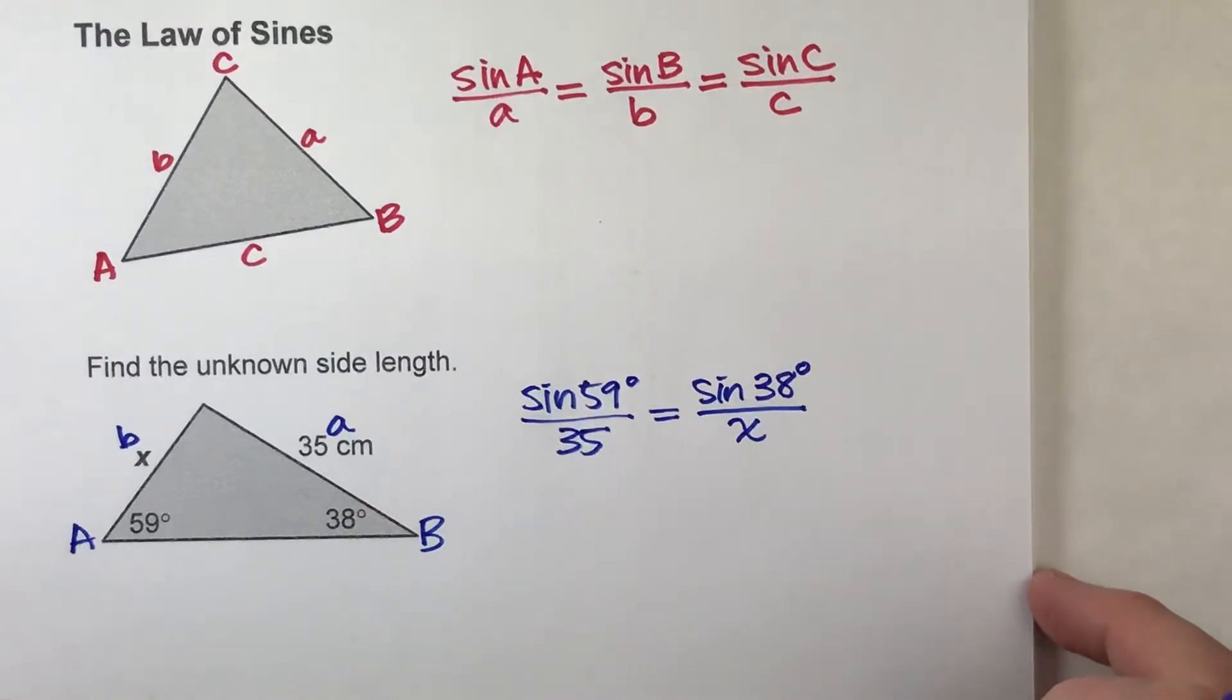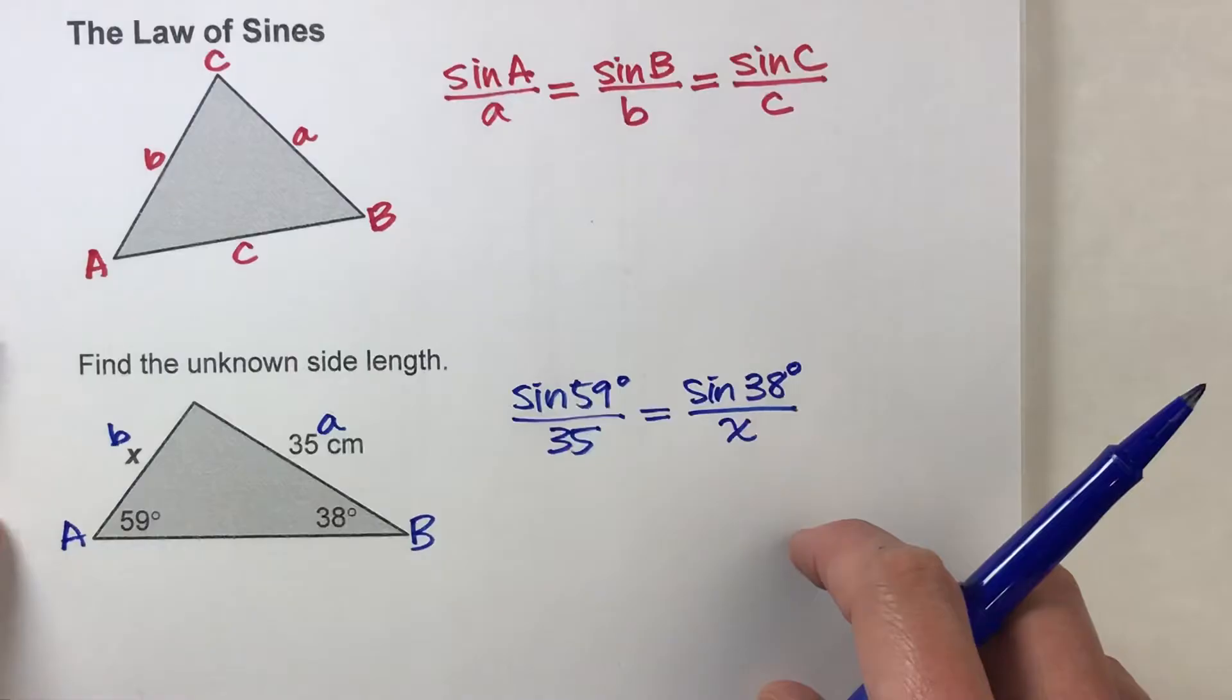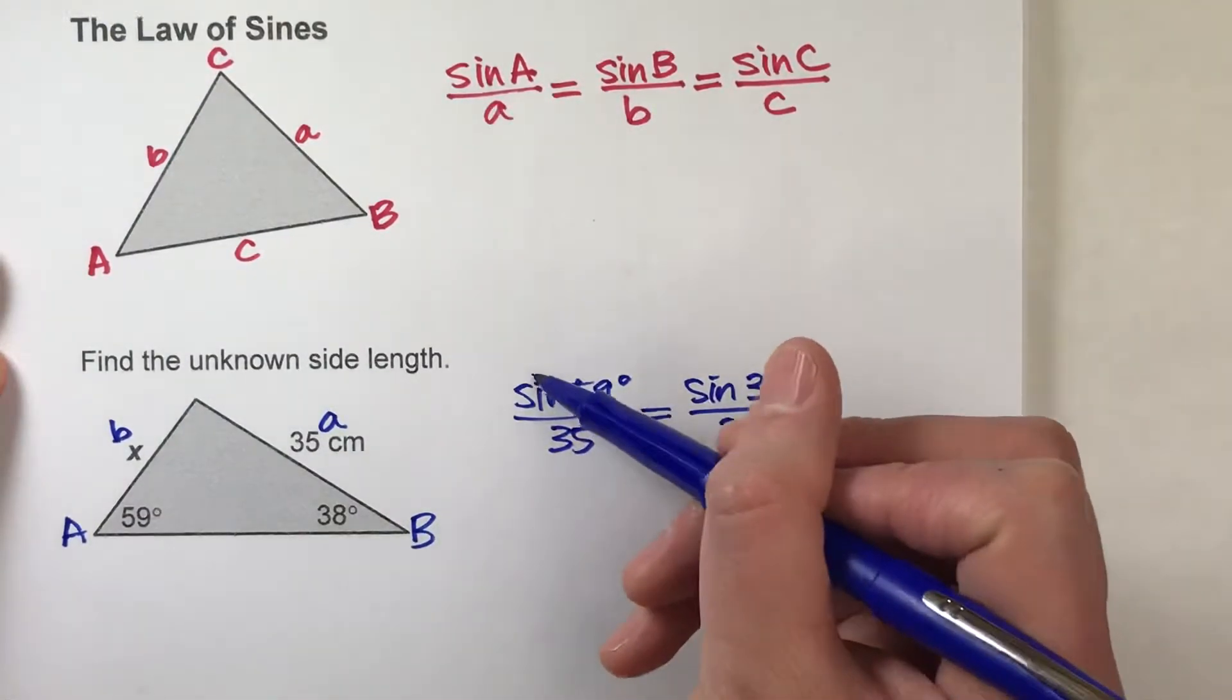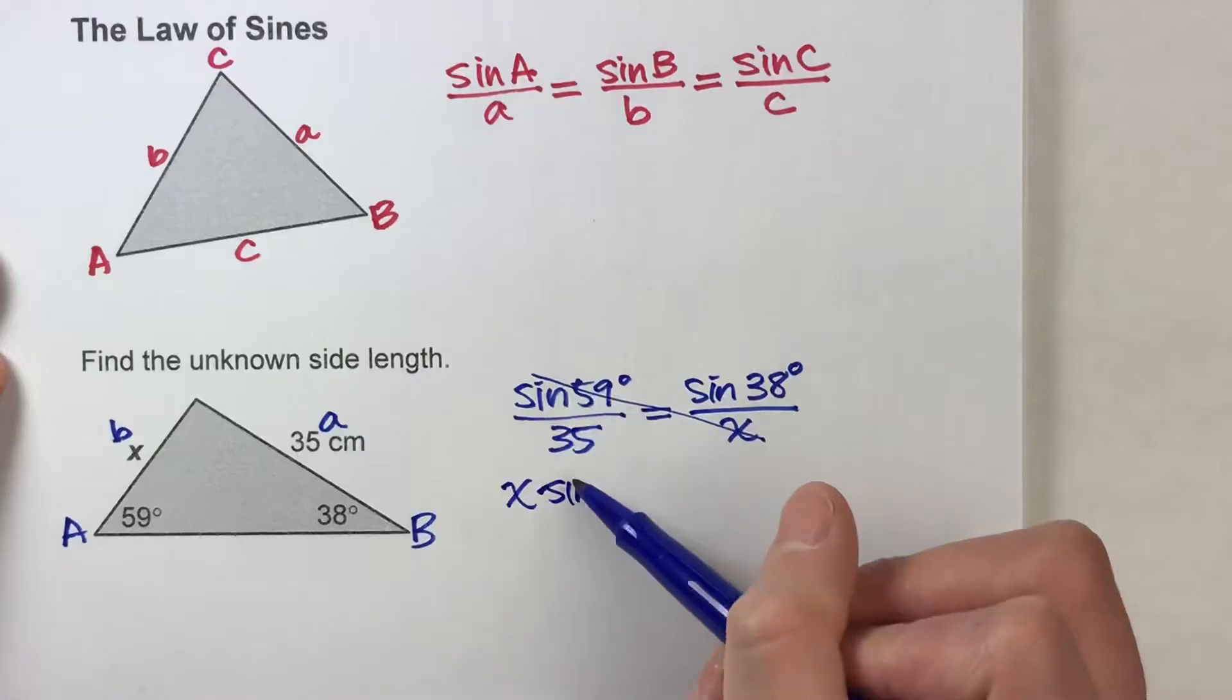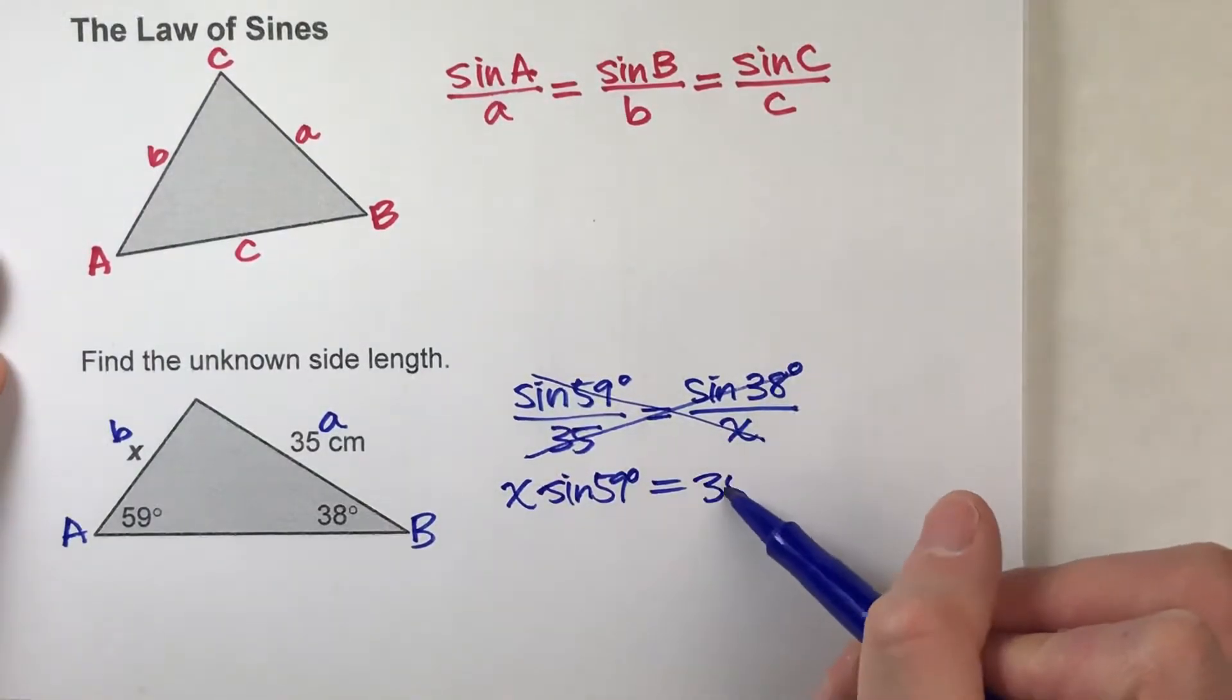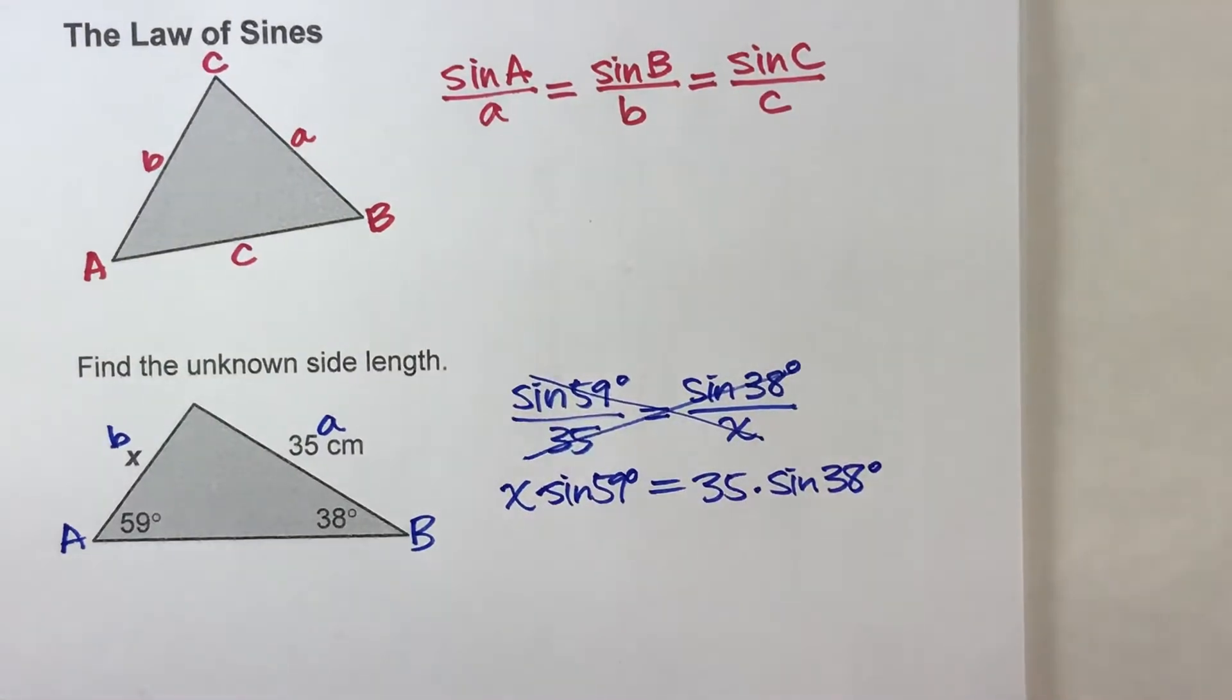And notice, now we have an algebra equation with an unknown that we can actually solve for x. So let's do that. If we do our cross products, because we have a proportion, we have x times sine of 59 degrees is equal to, do my cross product this way, 35 times sine of 38 degrees.